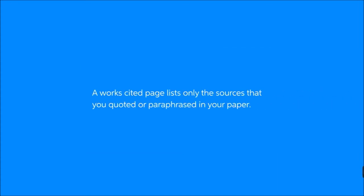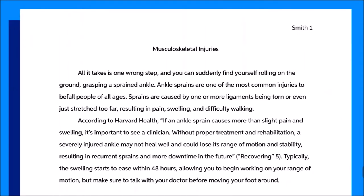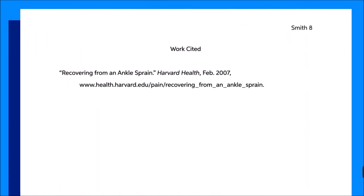On the other hand, works cited pages list only the sources that you quoted or paraphrased in your paper. Everything listed in your works cited page will have a corresponding in-text citation somewhere in your paper that tells your reader that this section was written by somebody else. They'll then be able to go to your works cited page and find the full reference, which will allow them to find the quote in the original text. This is important for people who want to verify that you actually researched your topic and gives them an opportunity to trace how you came to your conclusions.